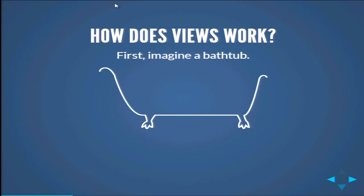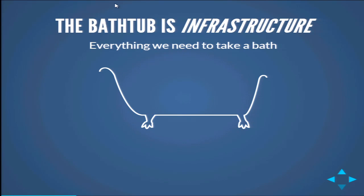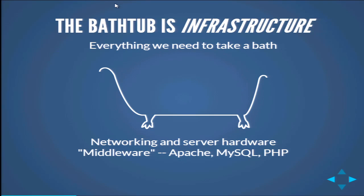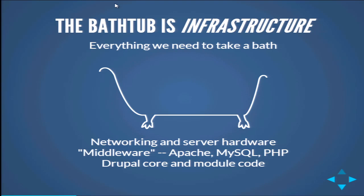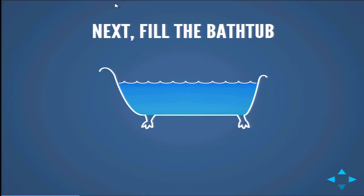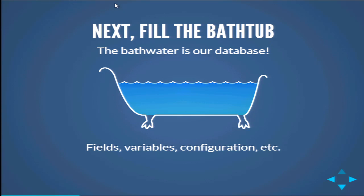So how does Views actually work? First, imagine a bathtub. The bathtub is our infrastructure — everything we need to take a bath. In terms of a website, that's networking and server hardware, middleware such as your web server software, the database software, PHP the execution language — all of that stuff physically necessary to make a website appear on the internet. Also Drupal core and any Drupal module code. That's all the infrastructure we need.